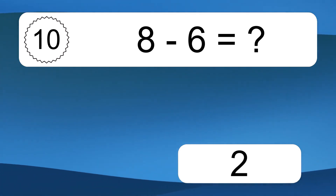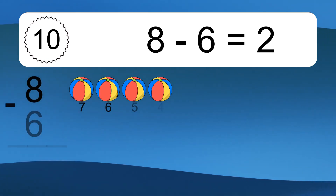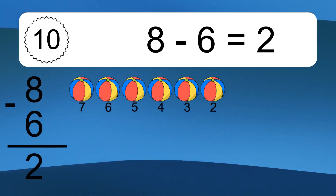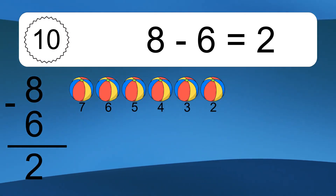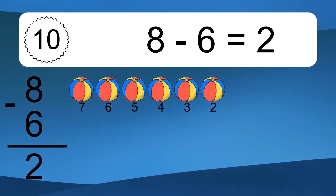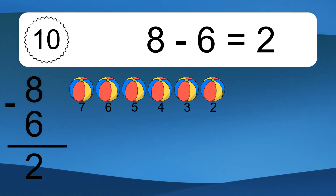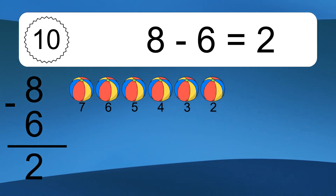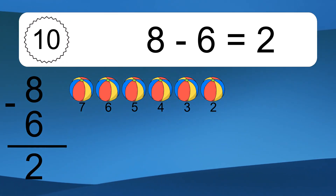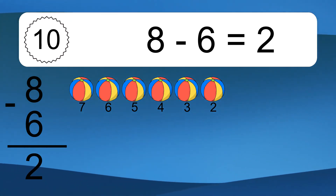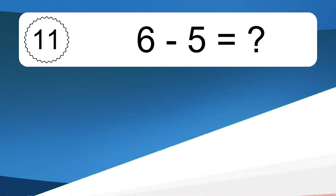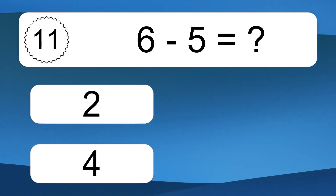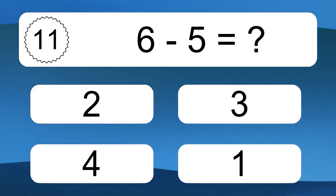8 minus 6 equals 2. Let's count it. 7, 6, 5, 4, 3, 2. 6 minus 5 equals what?